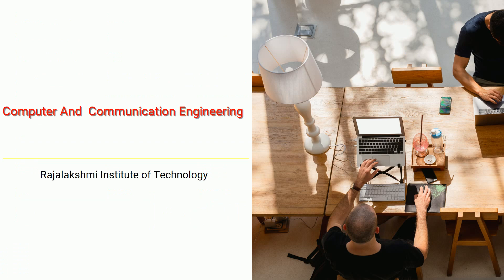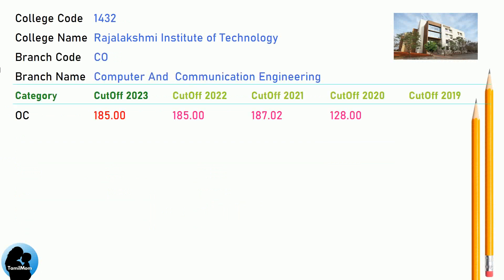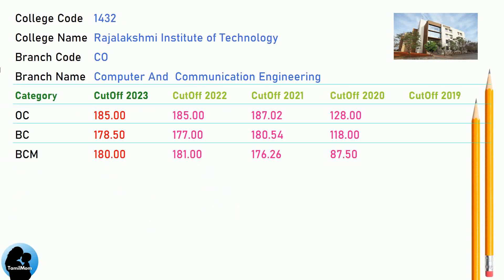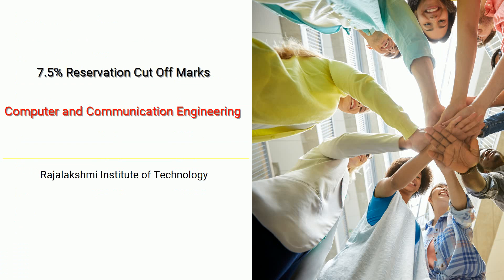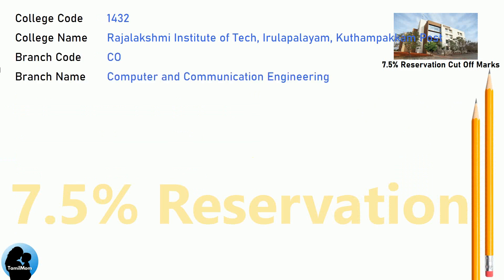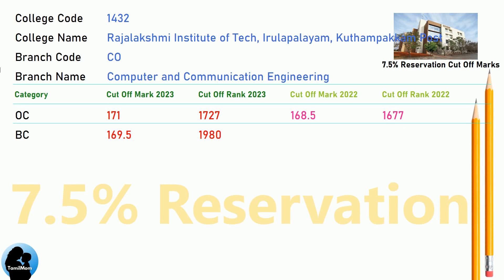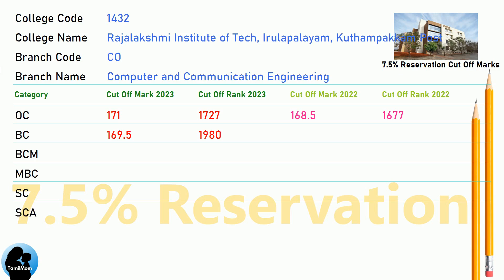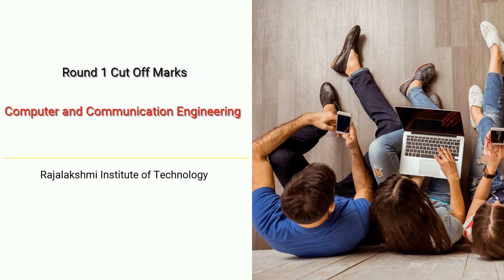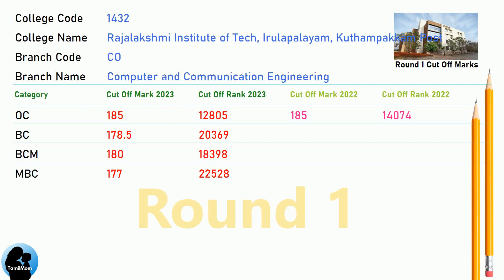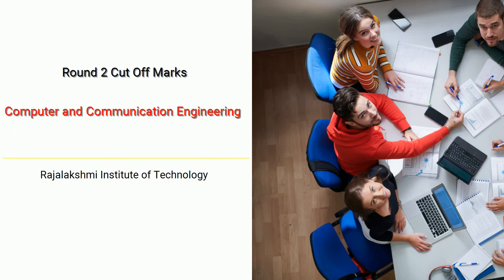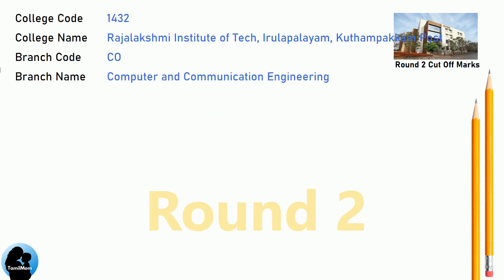DNEA Cut-Off for Rajalakshmi Institute of Technology in Computer and Communication Engineering. DNEA 7.5 Reservation Cut-Off, DNEA Round 1 Cut-Off, and DNEA Round 2 Cut-Off for Rajalakshmi Institute of Technology in Computer and Communication Engineering.